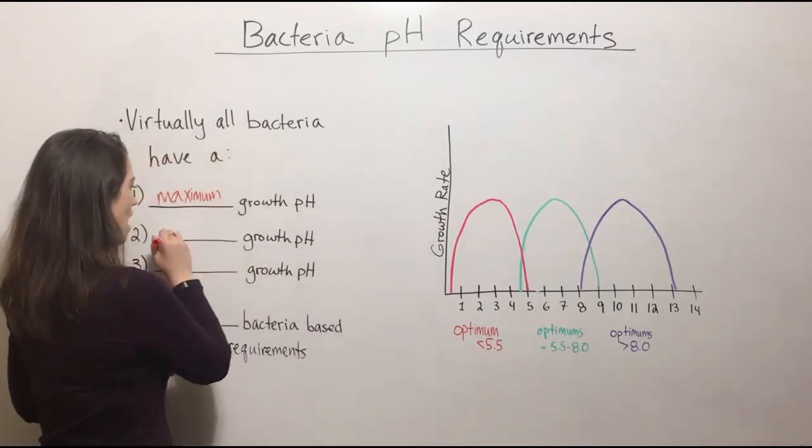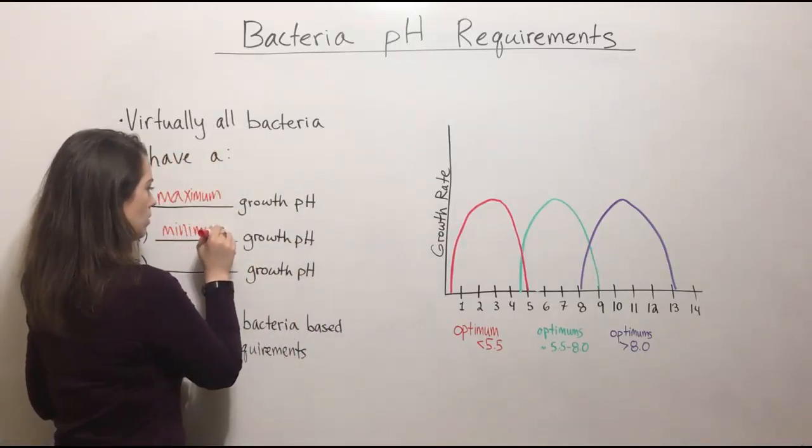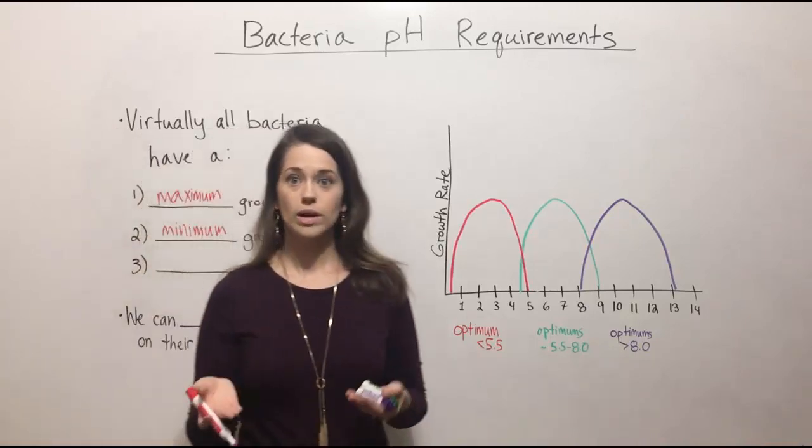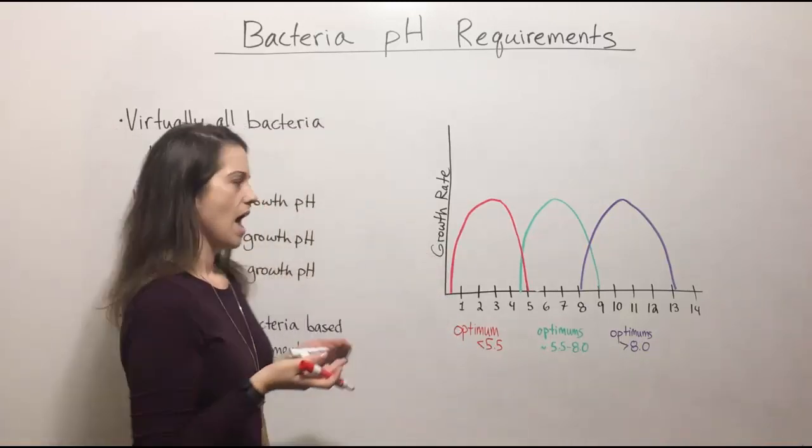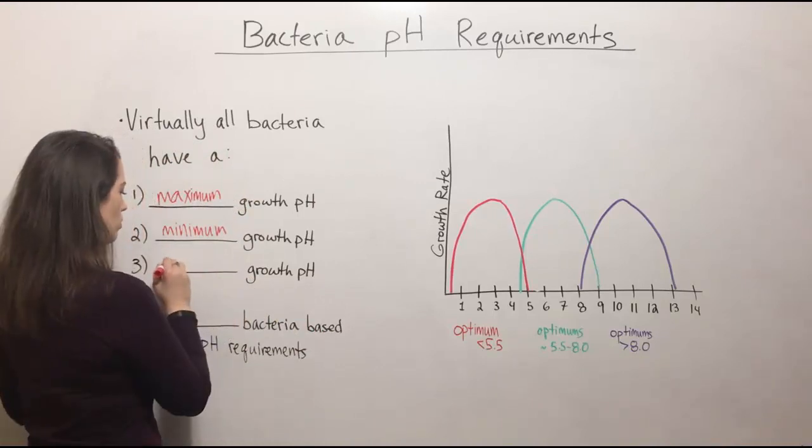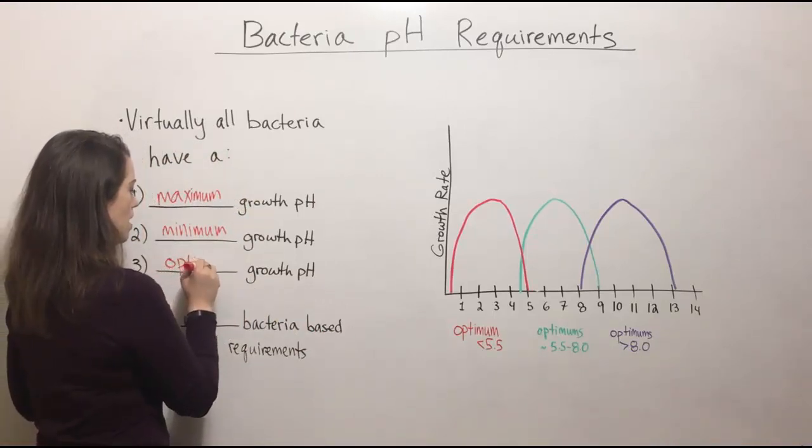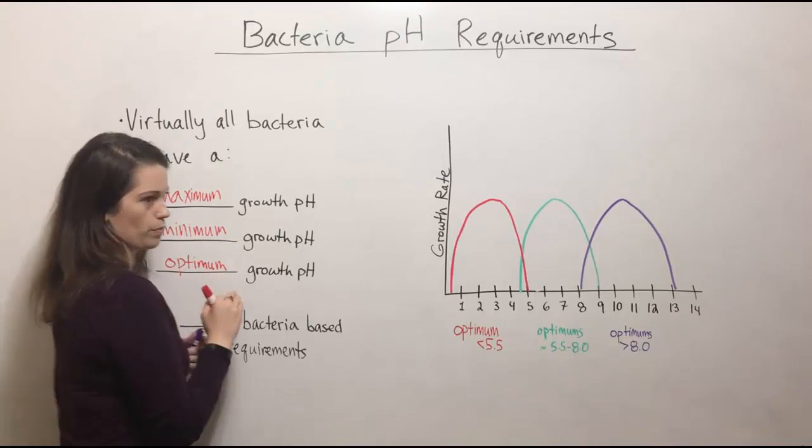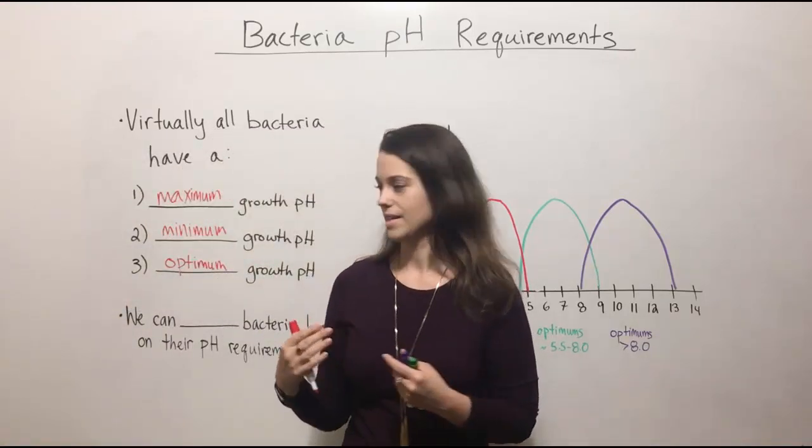They also have a minimum growth pH, so that would be the lowest pH at which they can grow, and also all bacteria are going to have an optimum growth pH. This optimum growth pH is where they are going to grow the best.